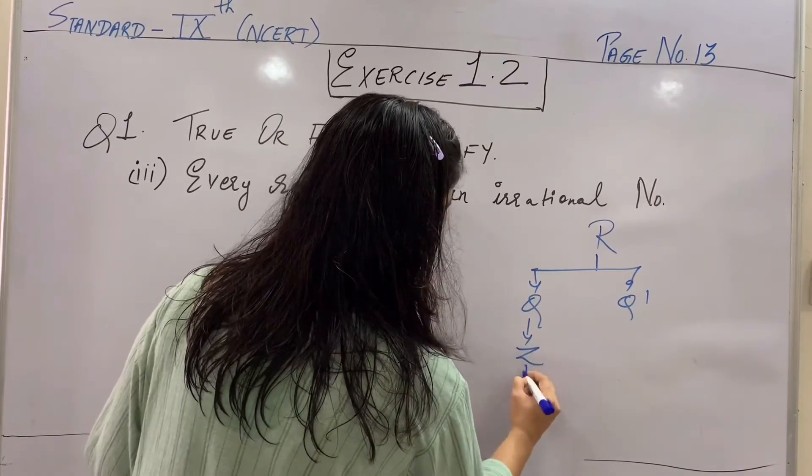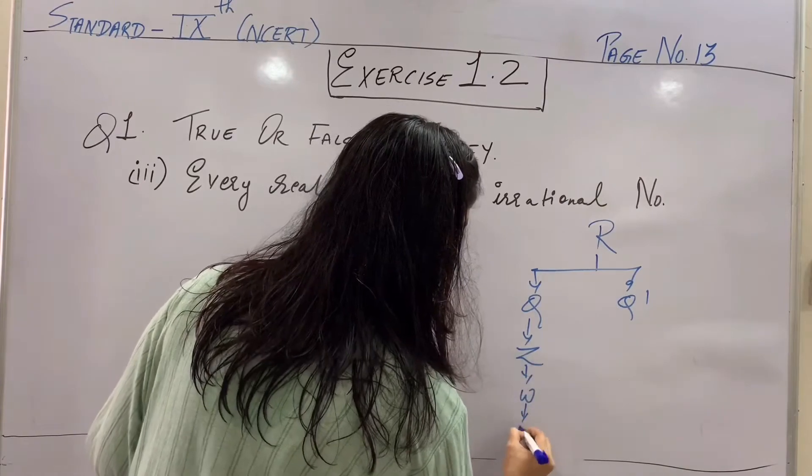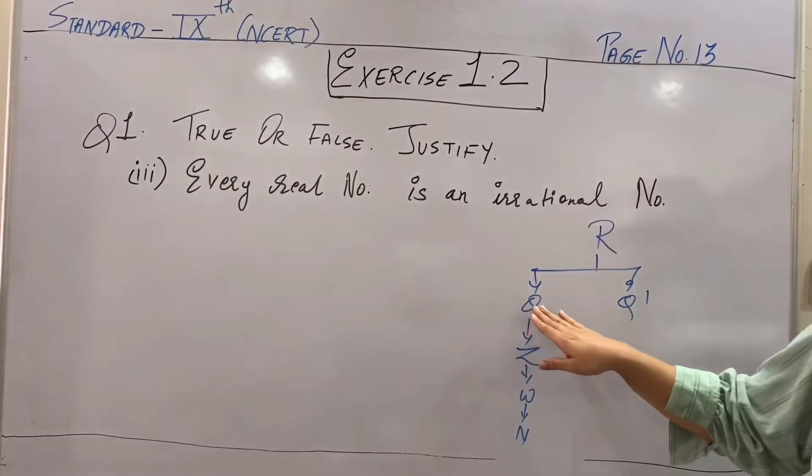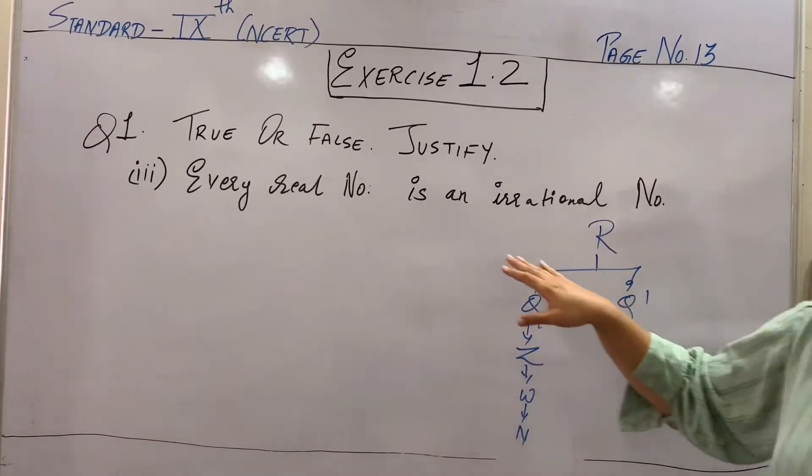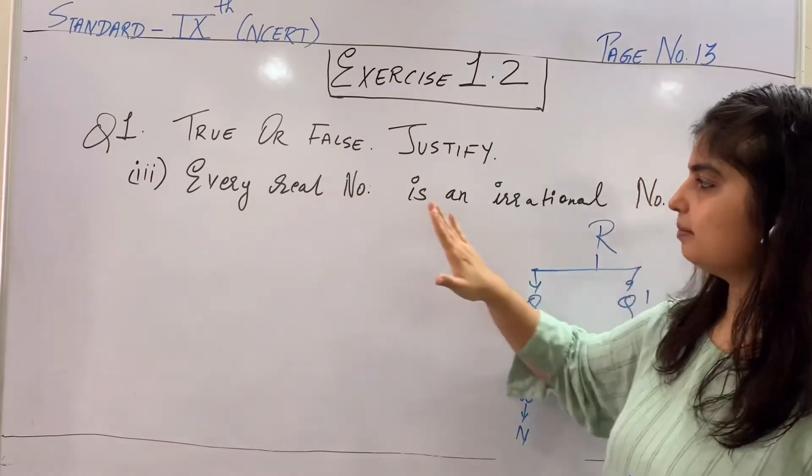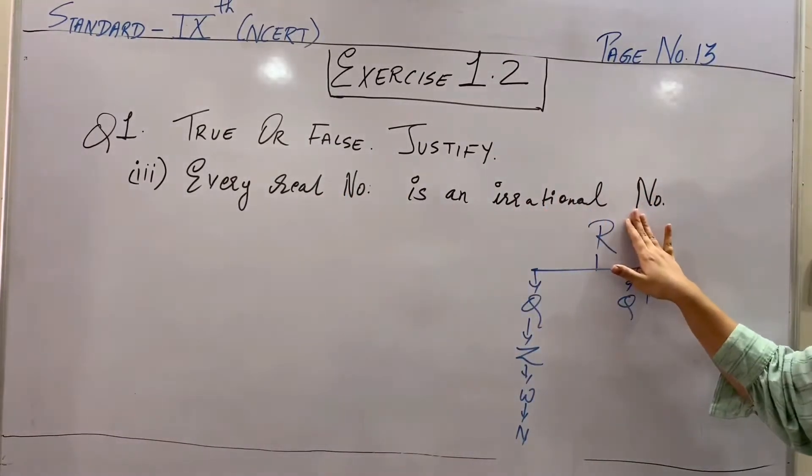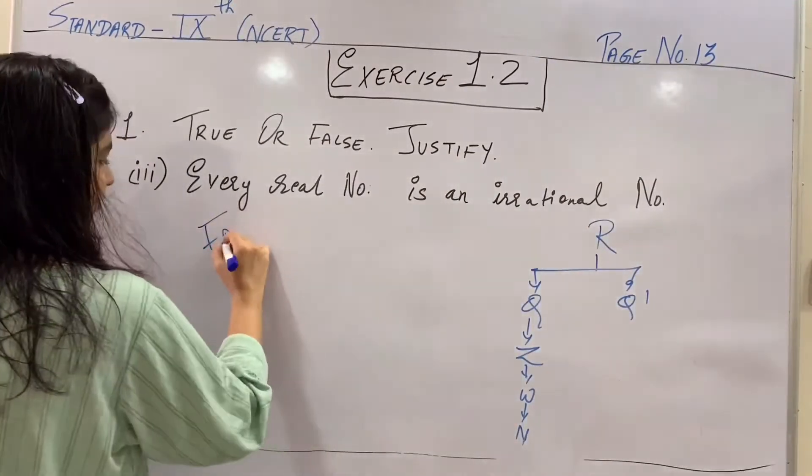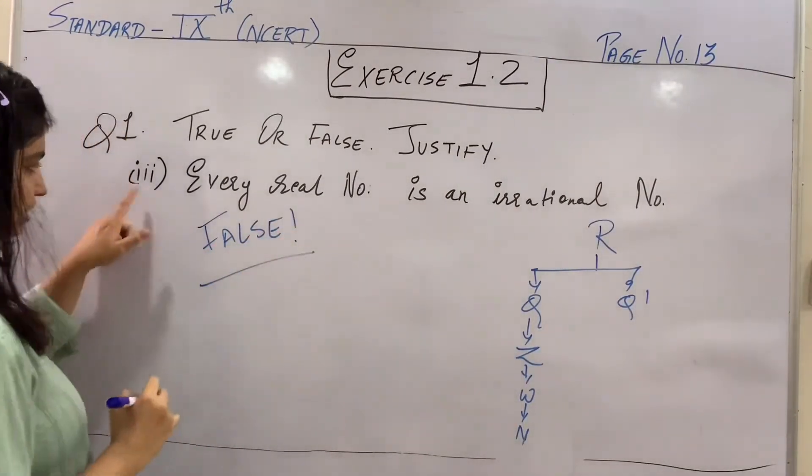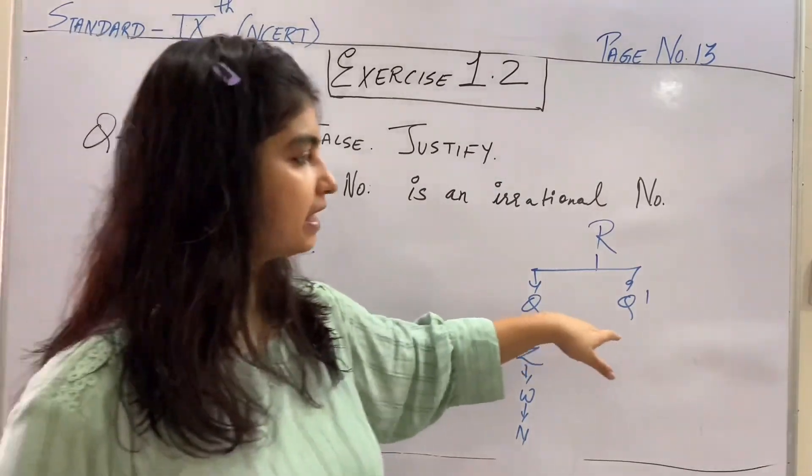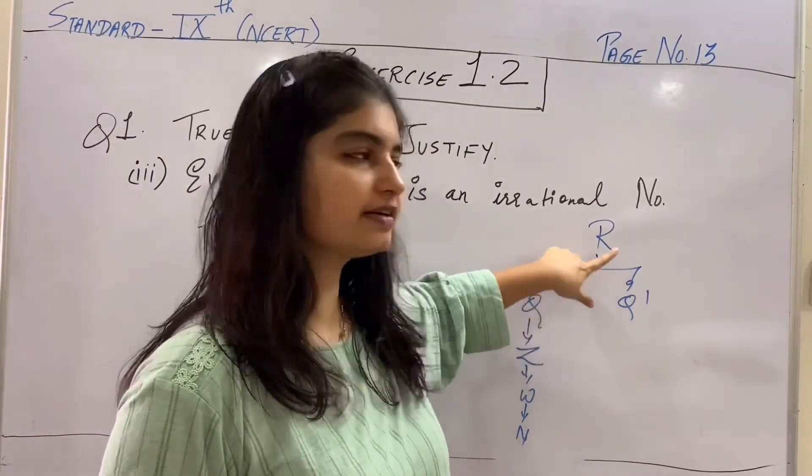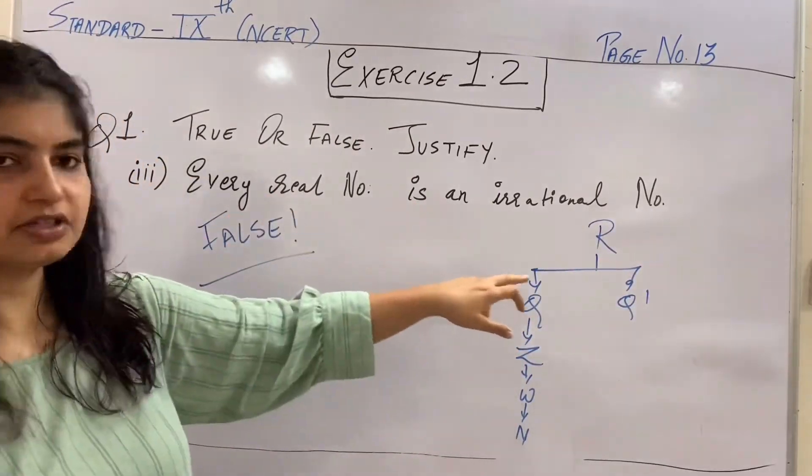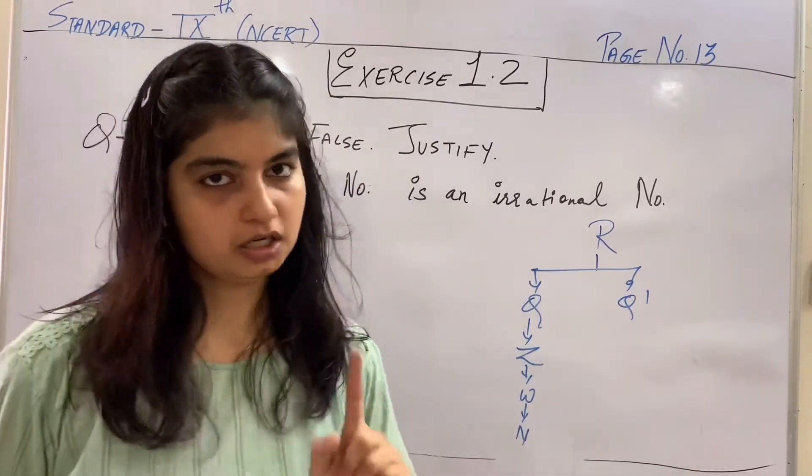So inti subcategory mein aapte hain rational, irrational. So yahan pe statement kya keh raha hai ki saare ke saare jo real numbers hain woh irrational numbers hain. Do you think this is true? No, absolutely not. It's a false statement. The reverse jo mein first statement, first question liya tha jahan pe likha tha all the irrational numbers are real numbers. Ulta is true but the reverse, that is real number is an irrational number, is absolutely a false statement.